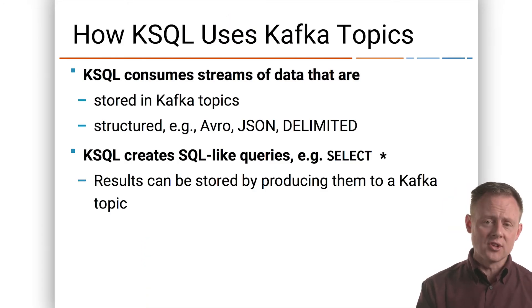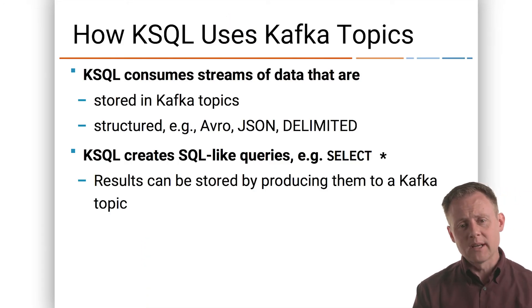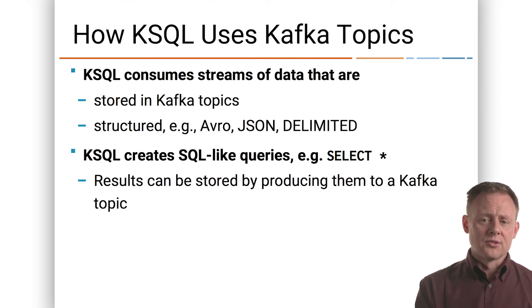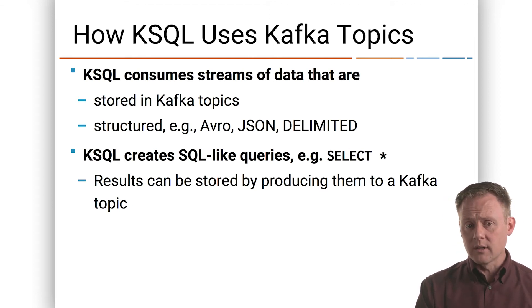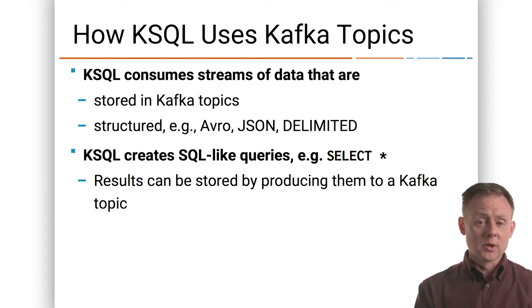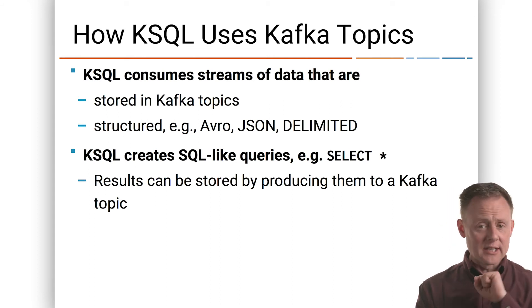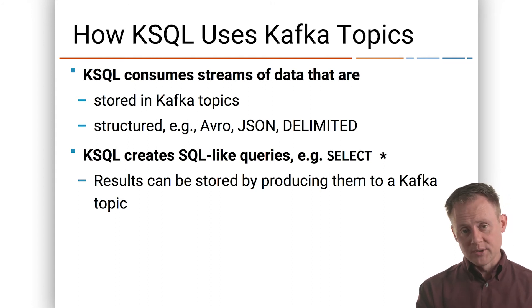What are these streams we're talking about? They're Kafka topics. When you run a KSQL query, the data is always coming from a Kafka topic. The data in that topic could be Avro, JSON, or comma delimited. So there are options for schema. And when we're creating new streams with a KSQL query, those will automatically get written back into a Kafka topic. We read data from Kafka topics, we write data into Kafka topics — in a simple, declarative, SQL-like way.